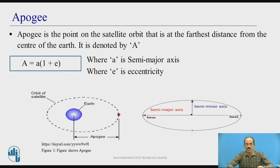First one is apogee. Apogee is the point on the satellite orbit that is at the furthest distance from the center of the earth, and it is denoted by A. It is given by capital A which is equal to small a into (1 plus e), where small a is the semi-major axis and e is the eccentricity.